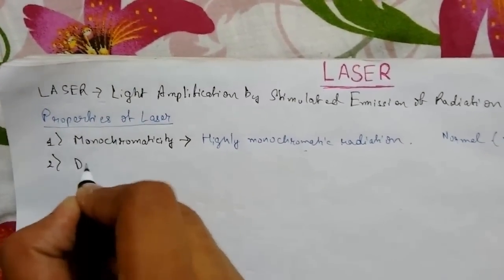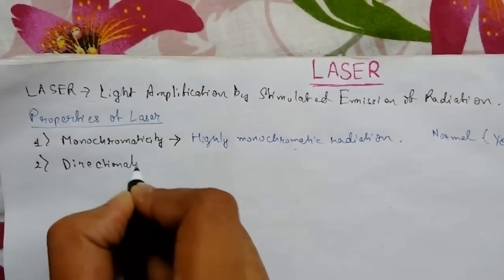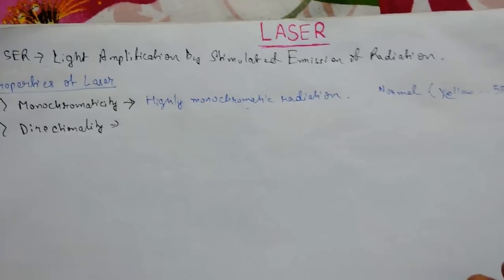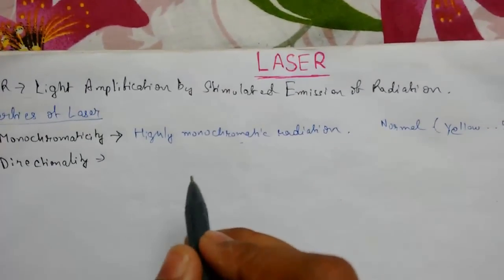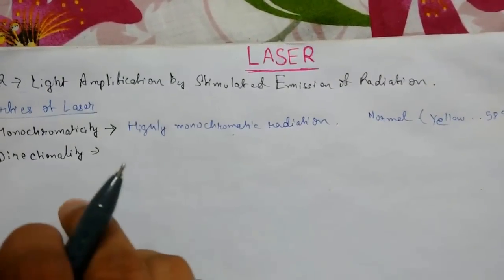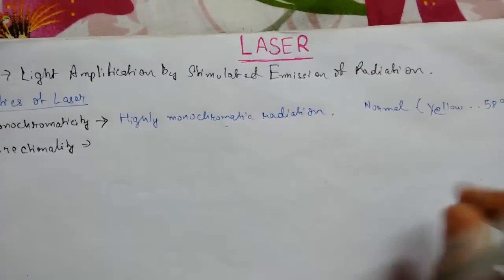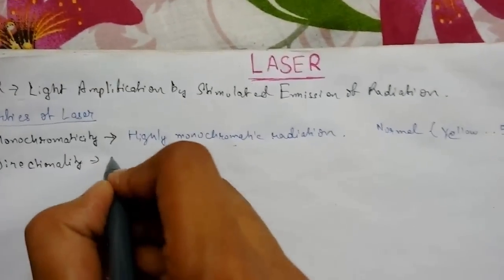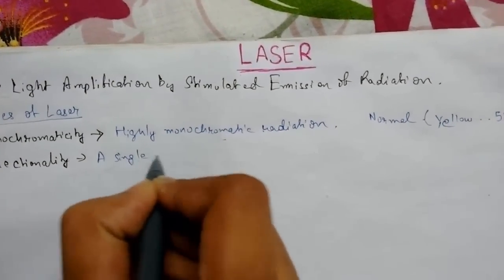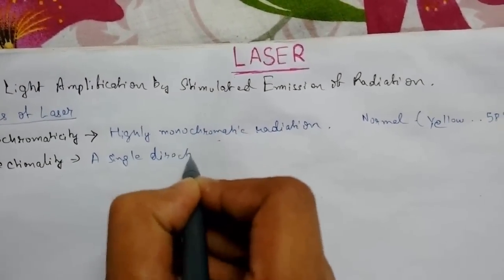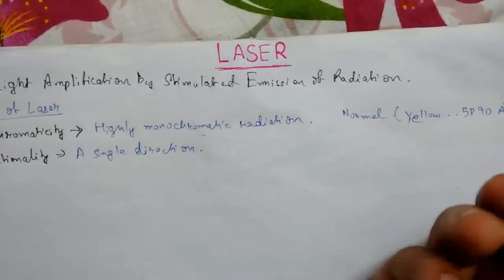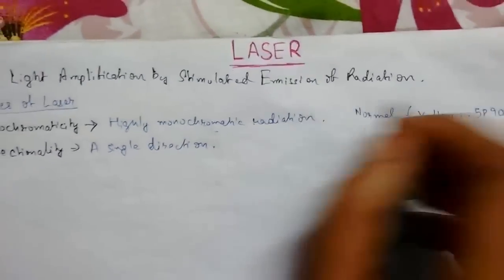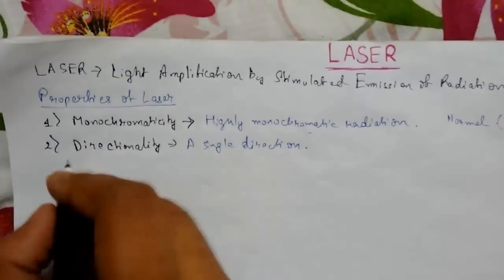At number two we have directionality. Laser produces only a single direction as the photons are traveling along the optical axis of the system. Ordinary light travels in all possible directions.